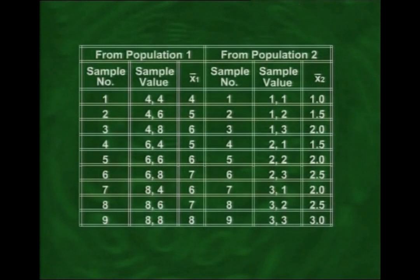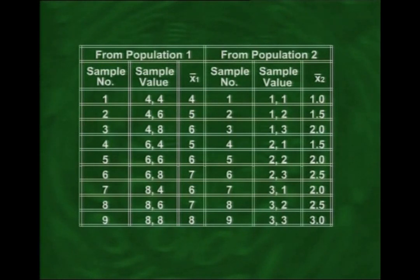The 9 samples from the first population are: {4,4}, {4,6}, {4,8}, {6,4}, {6,6}, {6,8}, {8,4}, {8,6}, {8,8}. The 9 samples from the second population are: {1,1}, {1,2}, {1,3}, {2,1}, {2,2}, {2,3}, {3,1}, {3,2}, {3,3}. Note that since we are sampling with replacement, repeated elements like {1,1} are possible.